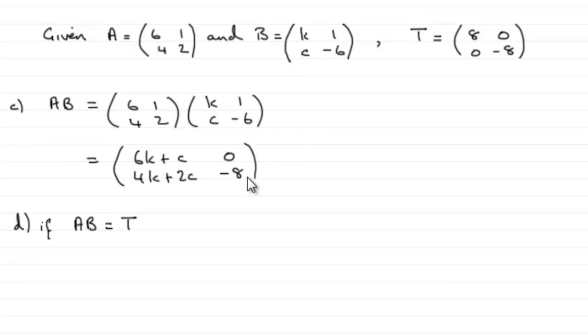Well to do this, all we've got to do is say that this matrix, the result of AB, must be identical to this matrix. Let's just put that down here.